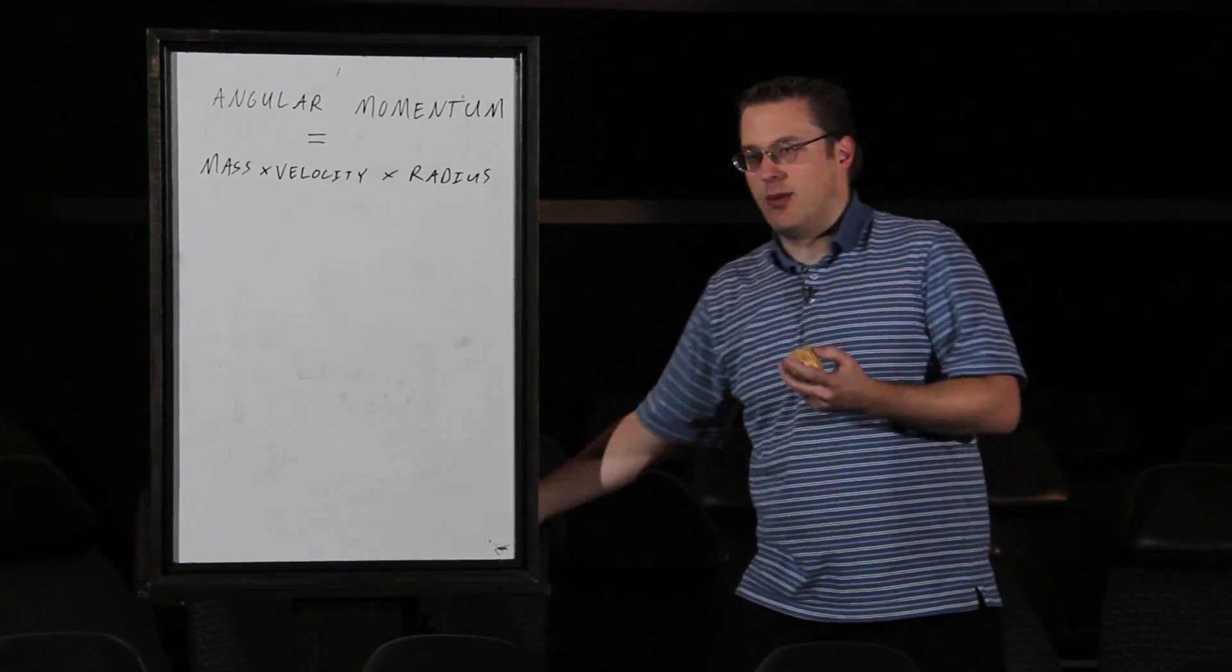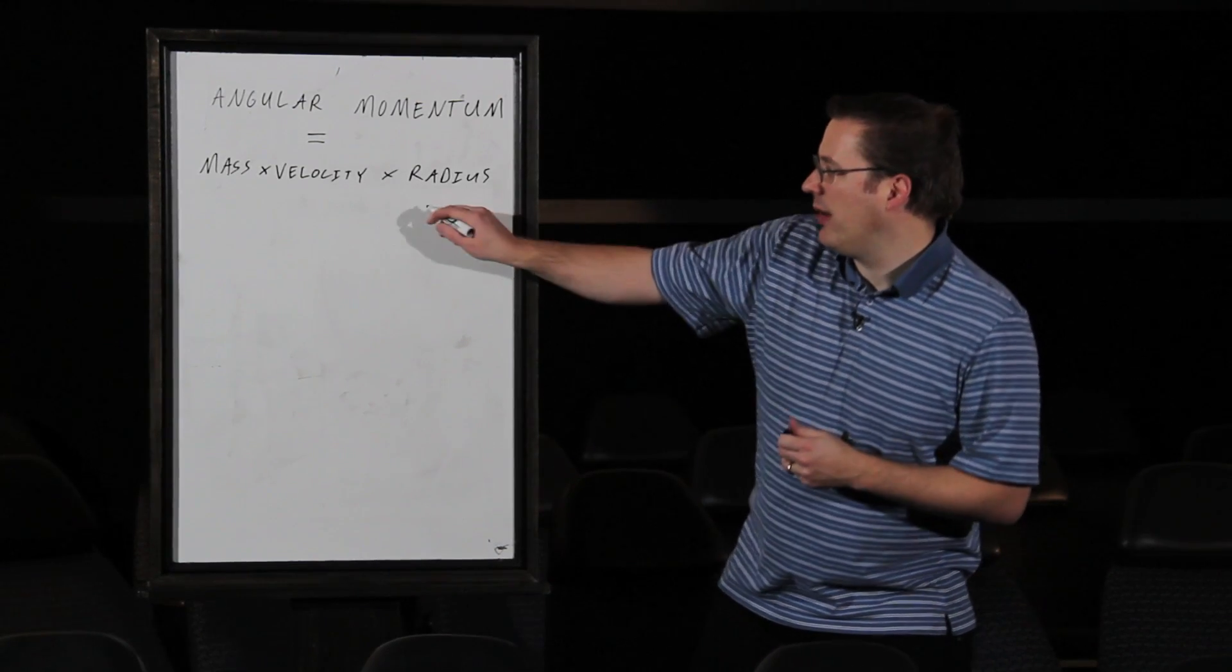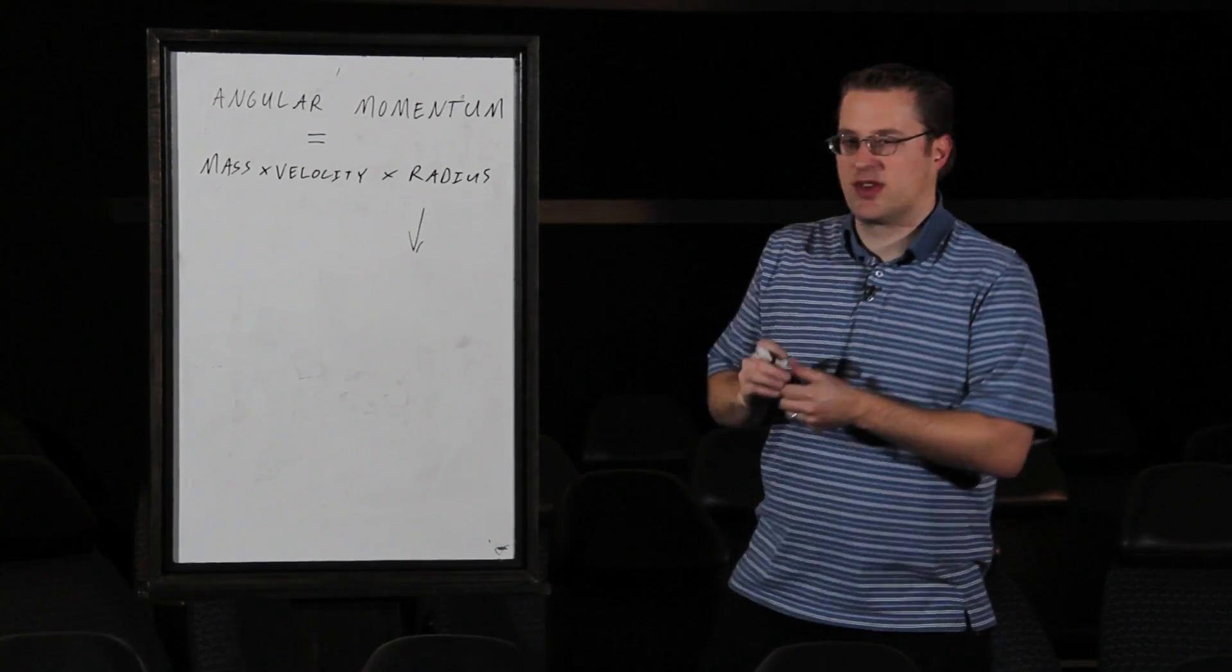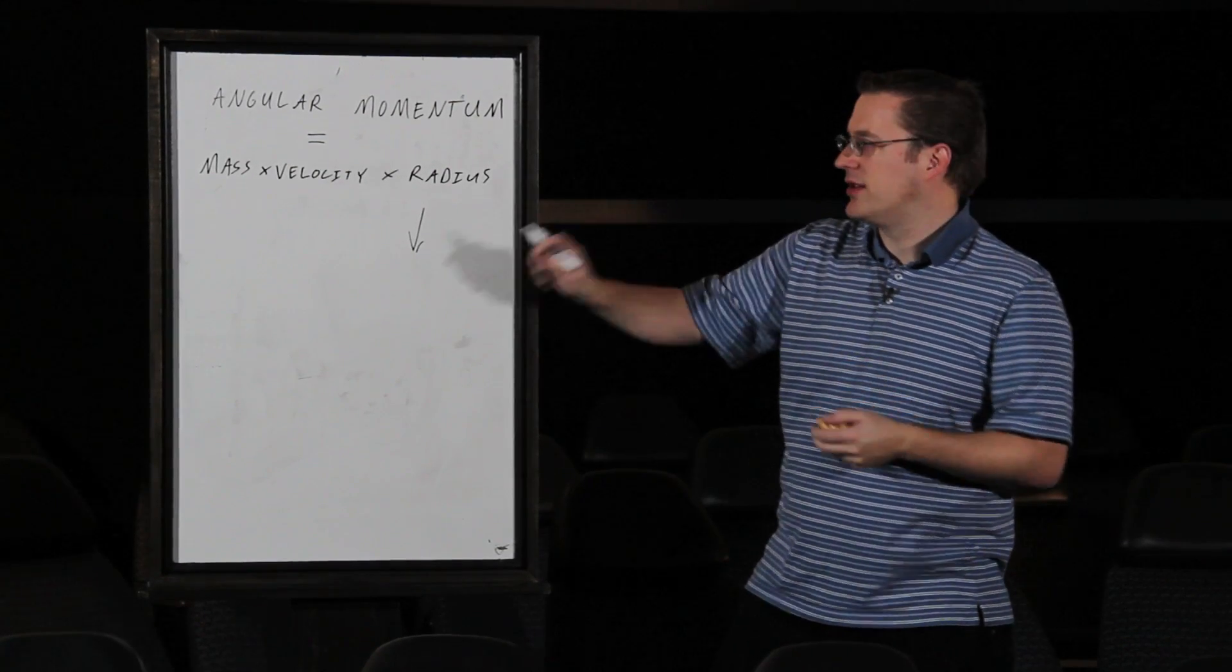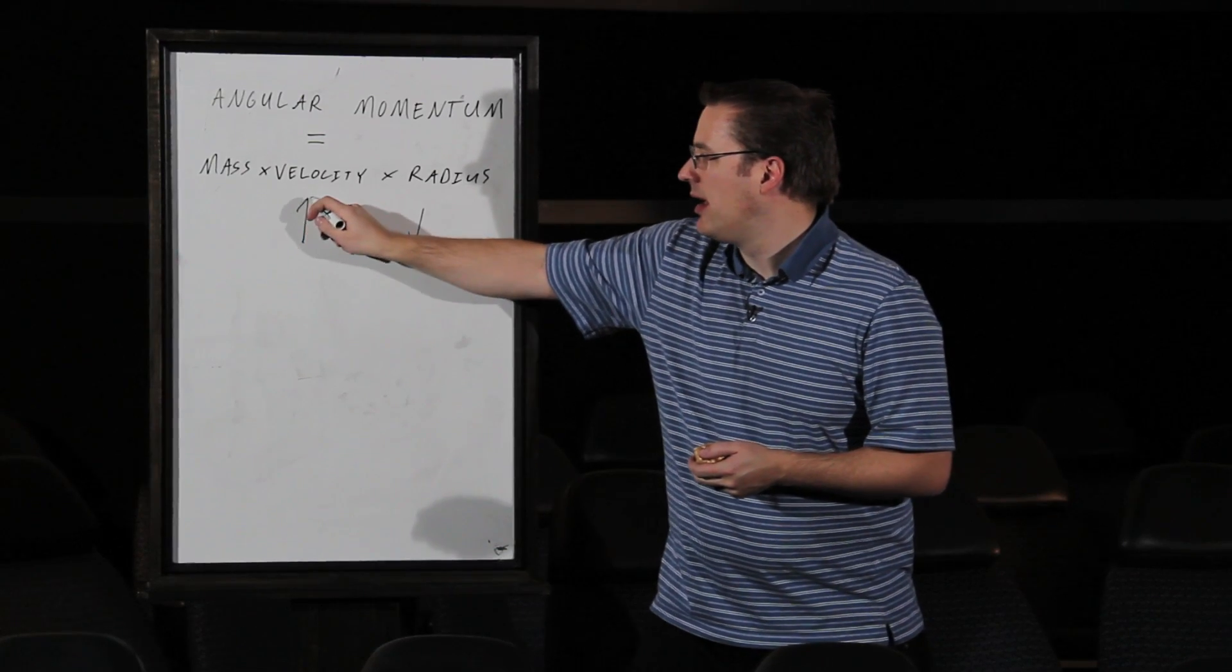But the radius went very far down very quickly. That radius went down into the small clump instead of the spinning disk. Since we know angular momentum had to be conserved, the velocity had to go up.